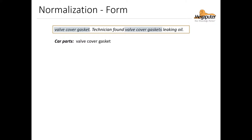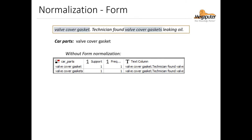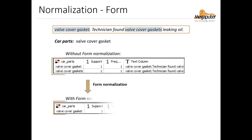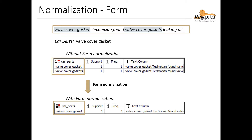We can also normalize form with the normalization post processor. Here we have a similar case where we want to capture valve cover gasket as a car part entity. Without form normalization, it's treated as two different entities by the system. But once we use the post processor, it's treated as a single entity.